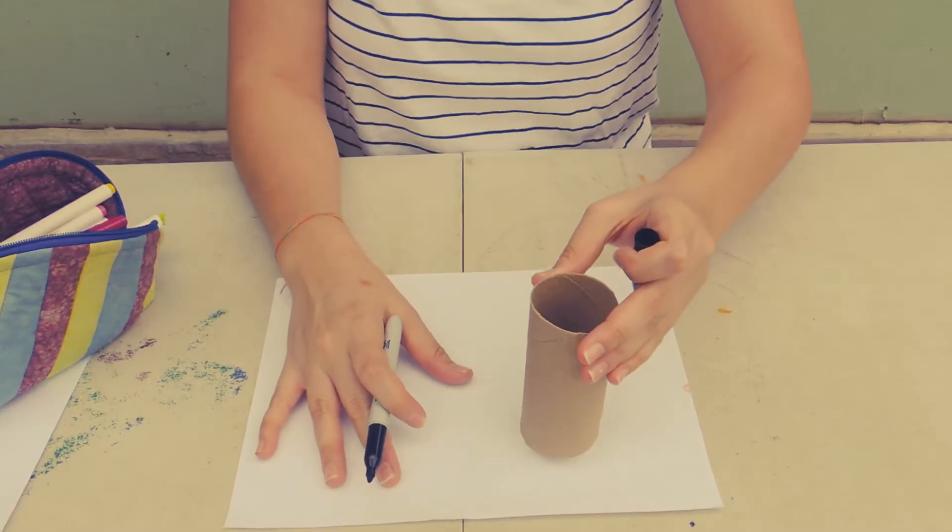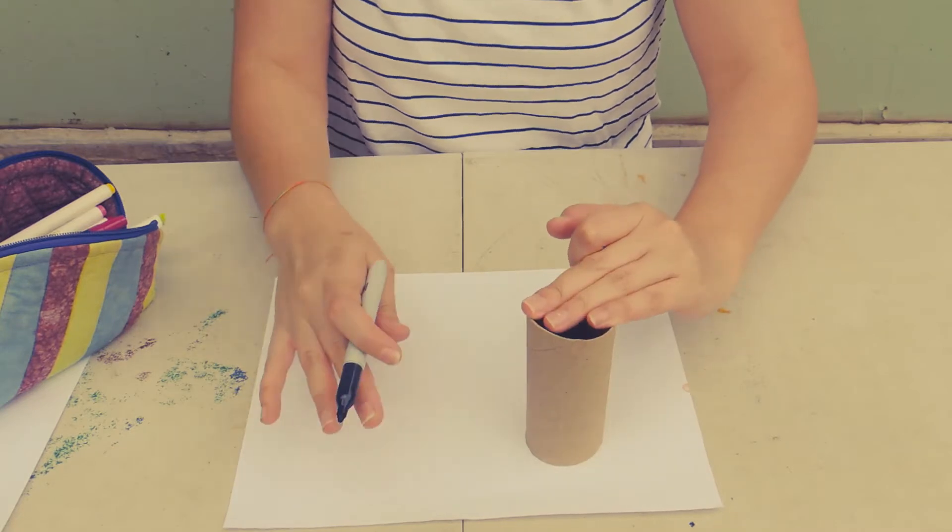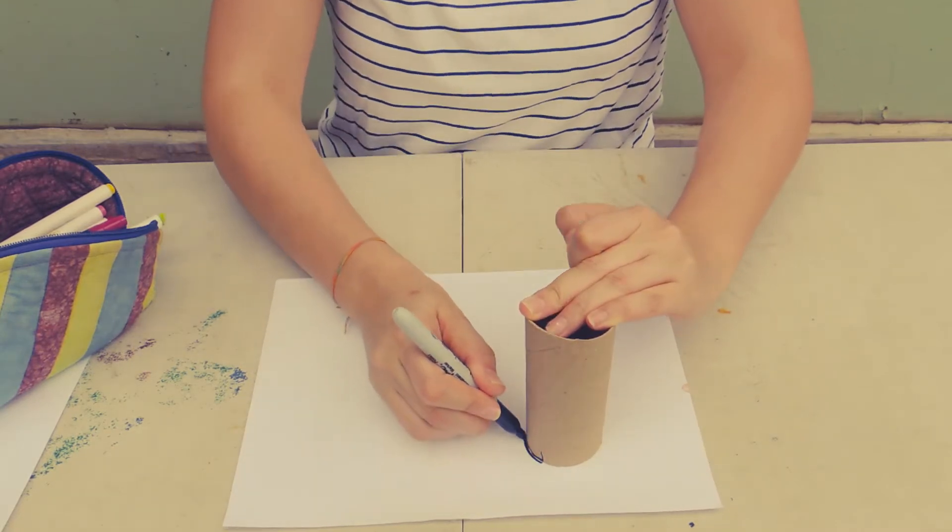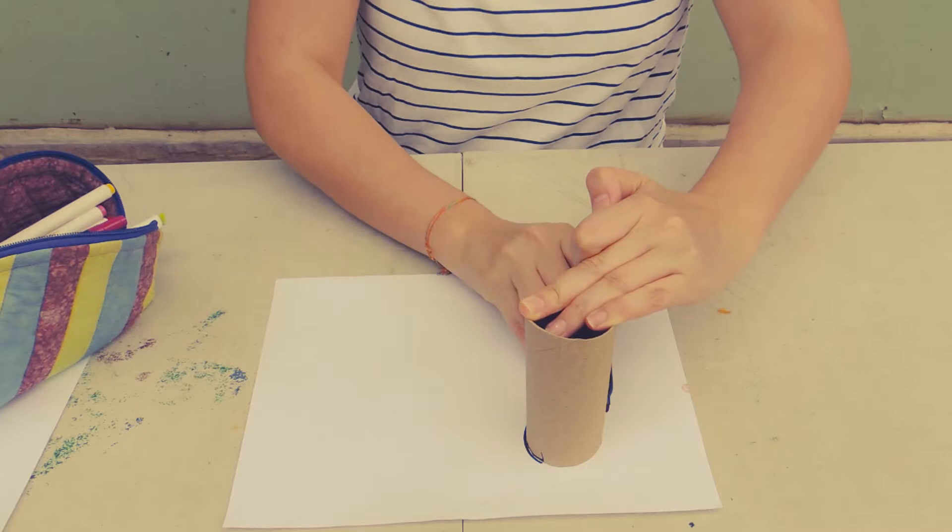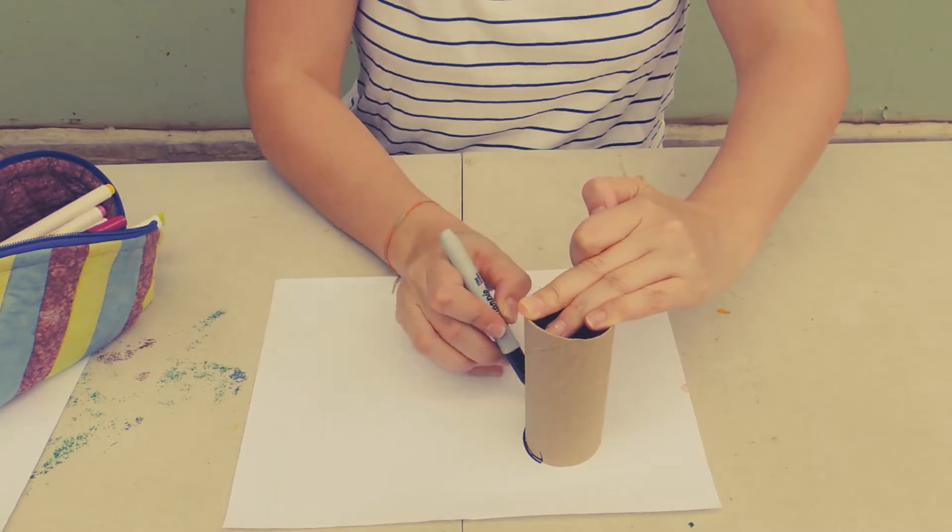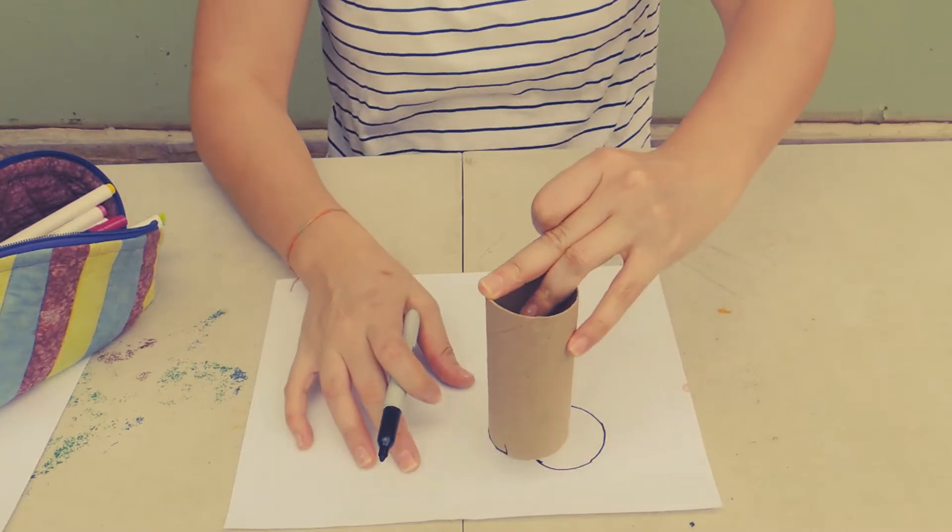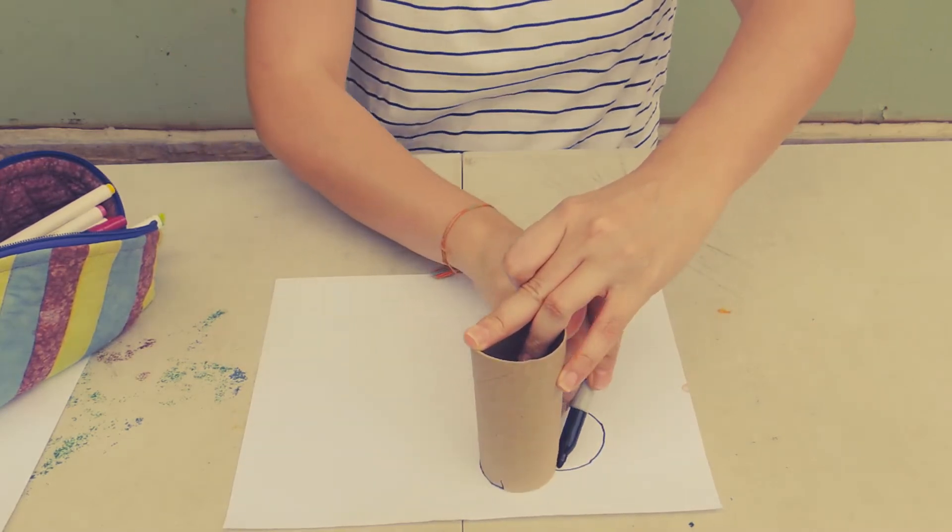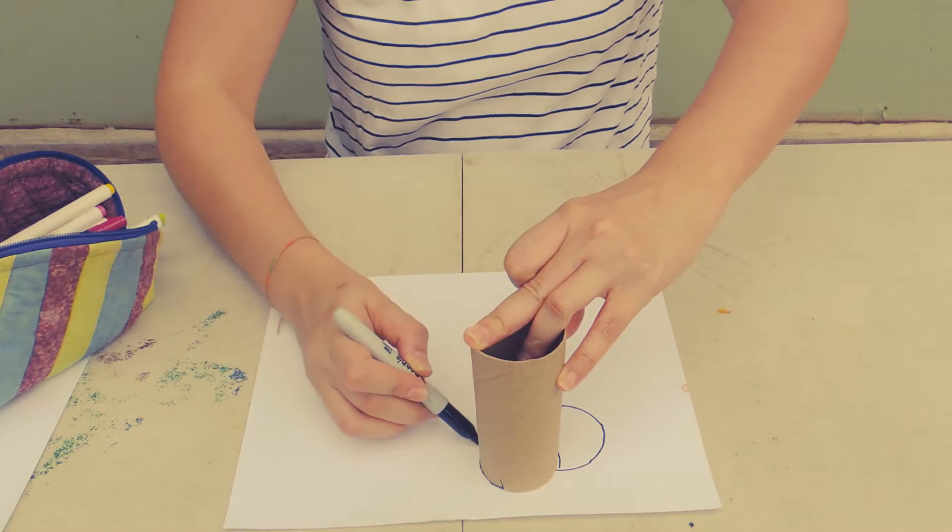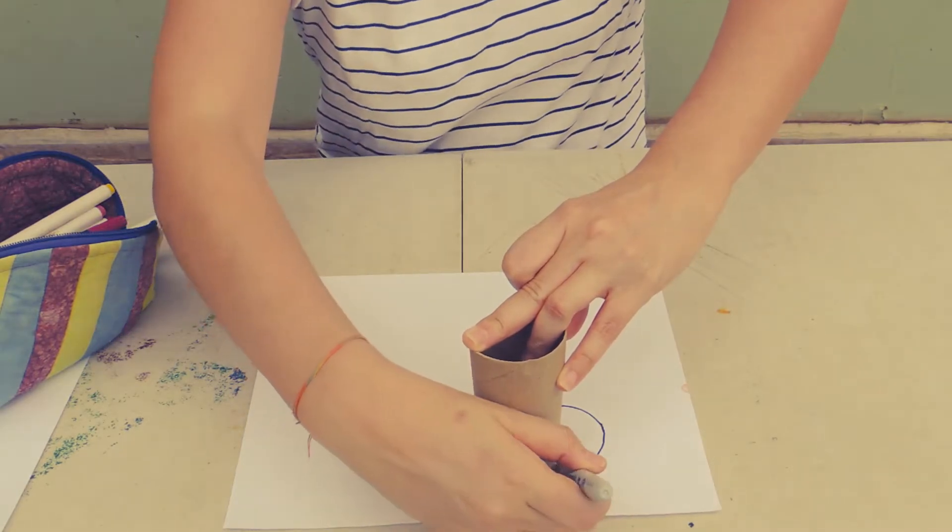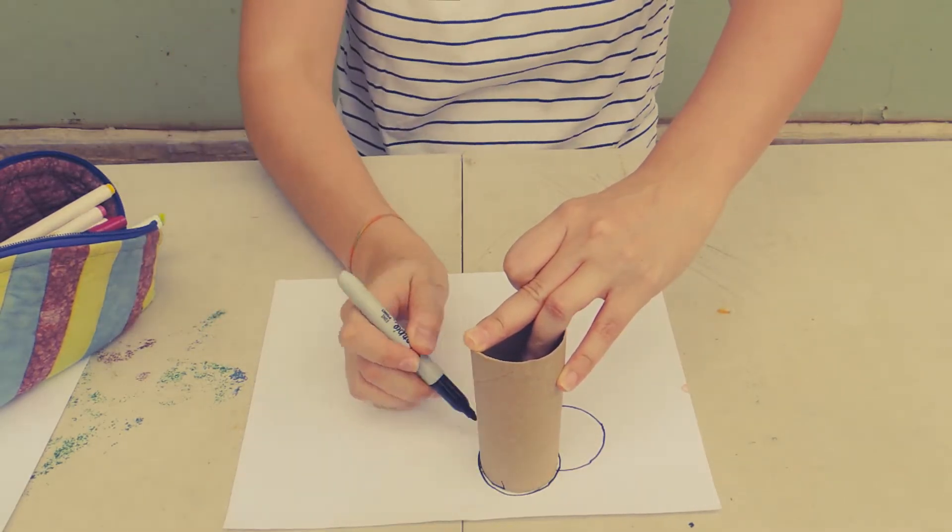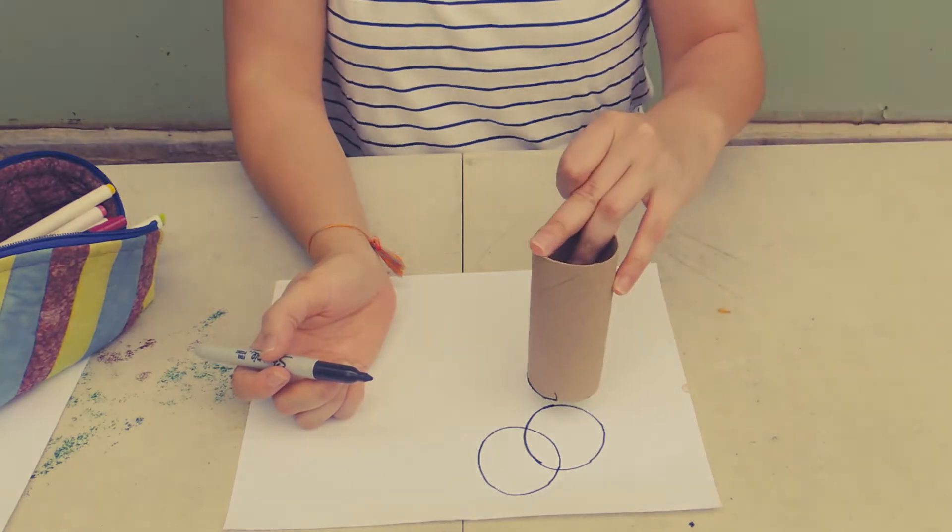You're going to take your roll over here and you're going to make some circles. Using your roll, you're going to start making circles all over the place. I'm going to start putting the roll one on top of the other so I can make two circles like this.